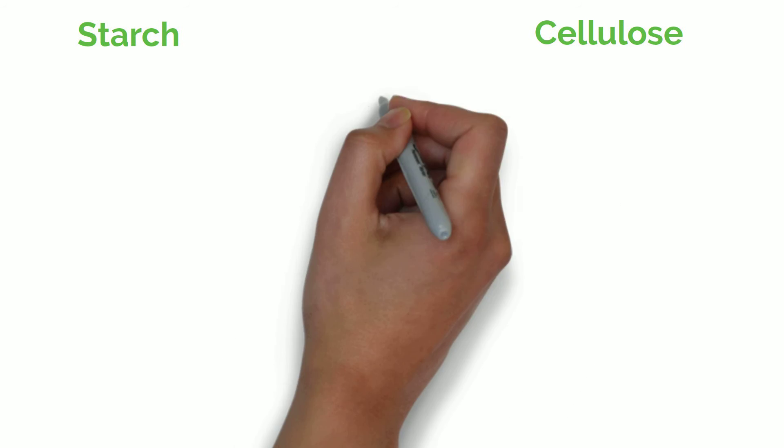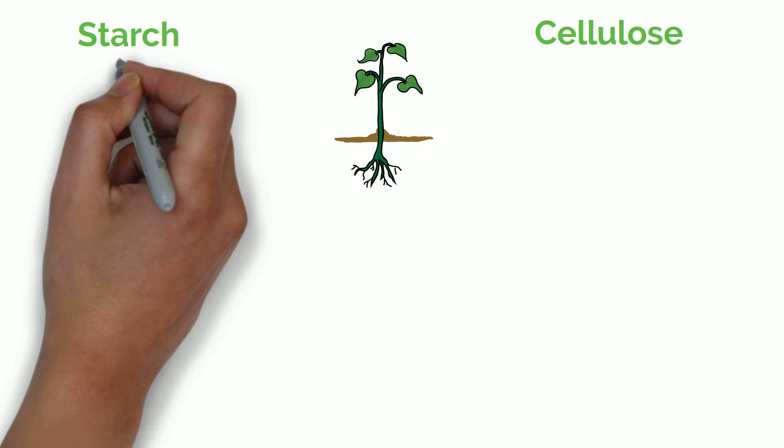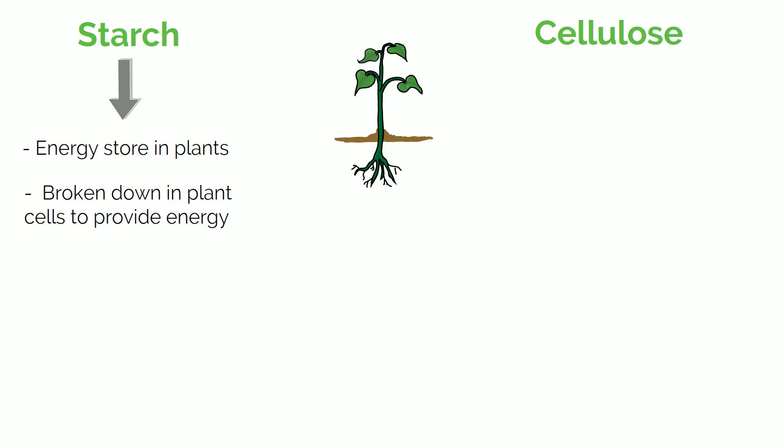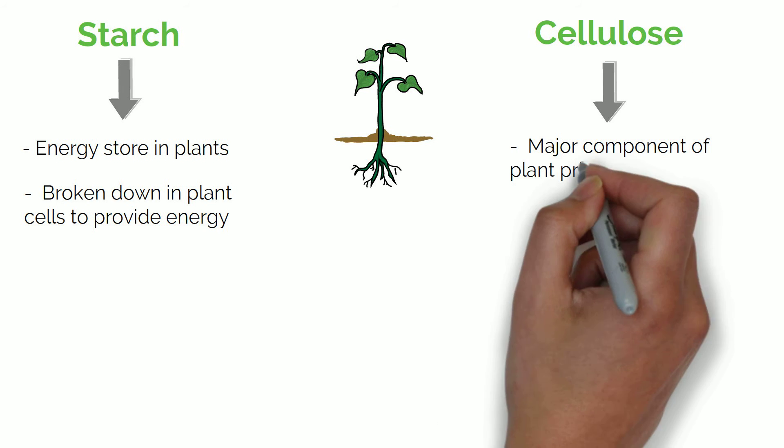Starch and cellulose are examples of polysaccharides which are found in plants. Starch is a major energy store in plants and is broken down in plant cells to provide energy. Cellulose is a major structural component of primary cell walls.